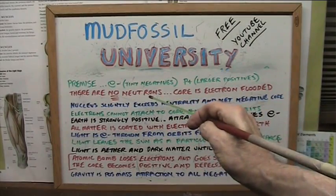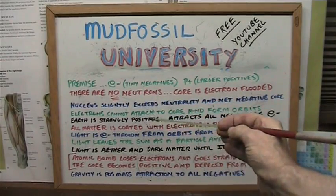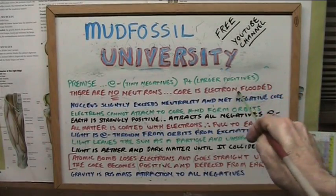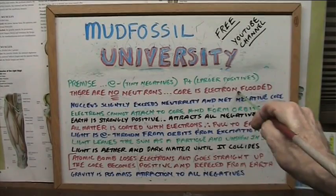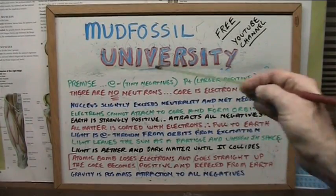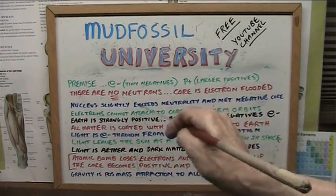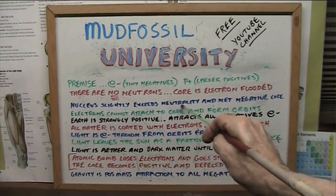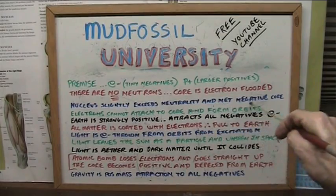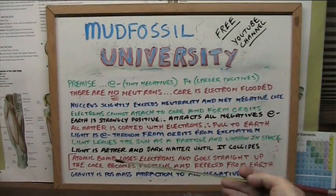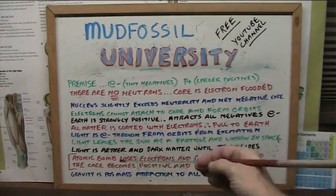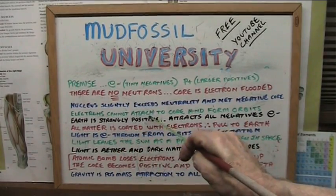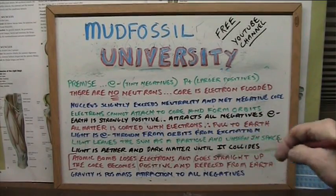Neutrons would not stick to the core if they were neutral. The positives would be smacked solid together with the electron negatives. At some point, the nucleus becomes completely flooded with electrons, and then it will actually slightly exceed neutrality, and the net negative core will repel further incoming electrons. Those electrons cannot attach and will stay at a distance to form orbits.